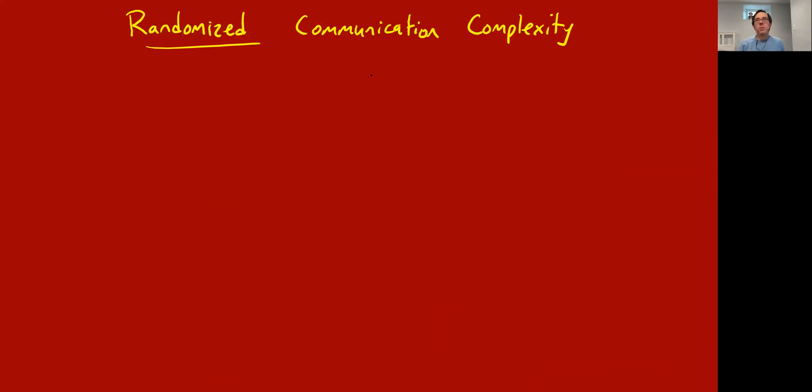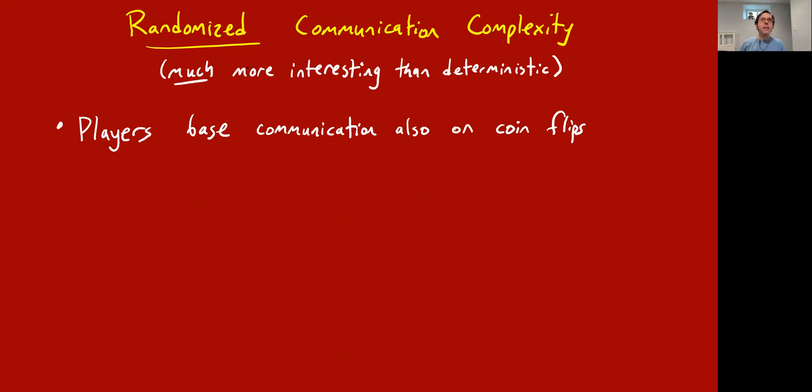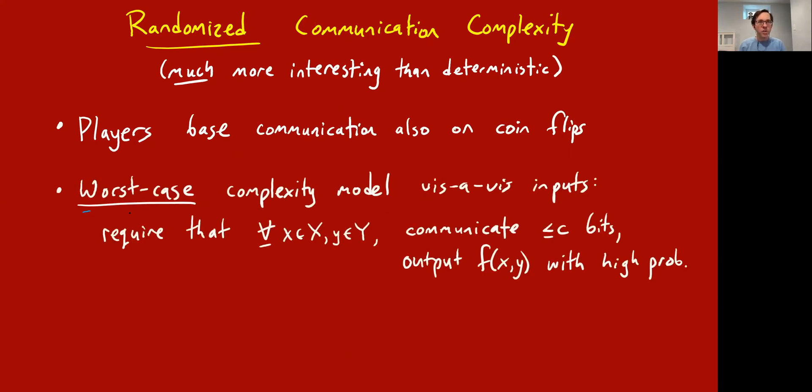Let me now move on to randomized communication complexity, which is more interesting than deterministic communication complexity. Here the players base communication also on coin flips. In addition to getting their inputs and following some fixed deterministic protocol, the protocol can involve Alice flipping coins to decide what she does next, Bob flipping coins to decide what he does next. I'll stress that we're working in a worst-case complexity model where it's not that the inputs are random. You're always worried about the worst case communication complexity over all possible inputs x and y. By using randomness, Alice and Bob might be able to come to the answer quicker using randomness on a particular string x and y than they would without randomness. You always require that they communicate at most c bits in the worst case, and they only have to output the correct answer with high probability.